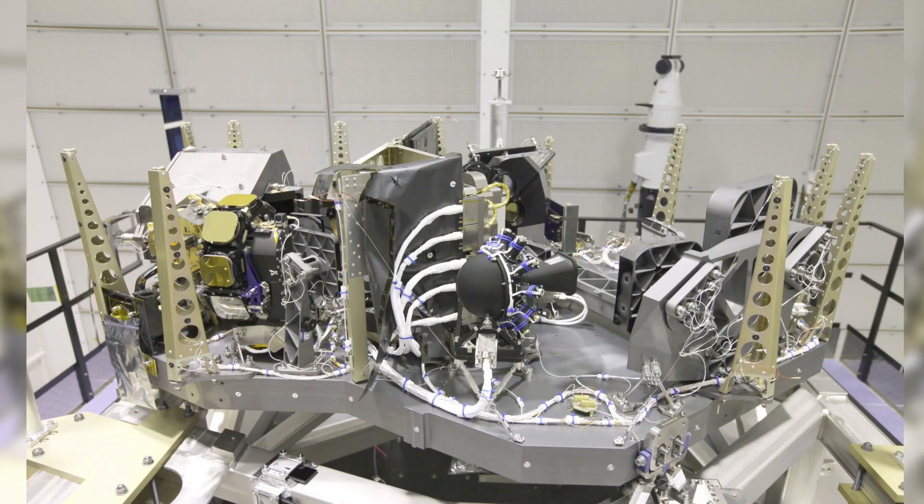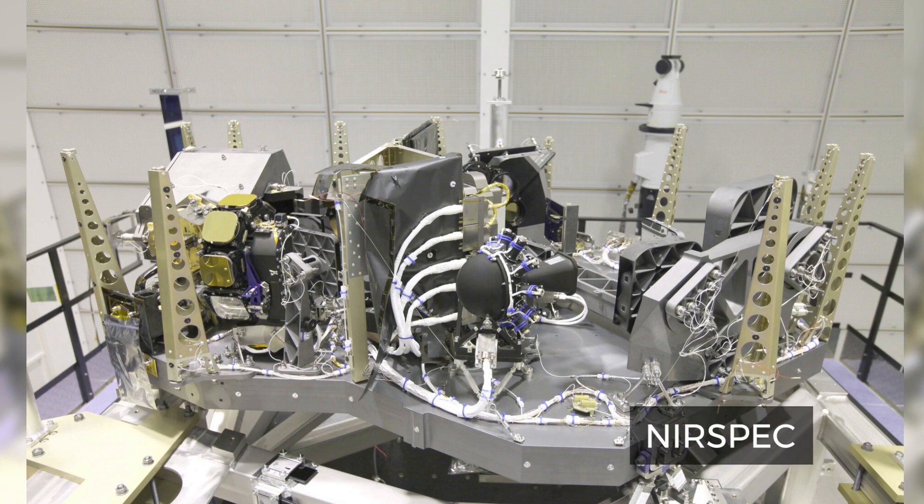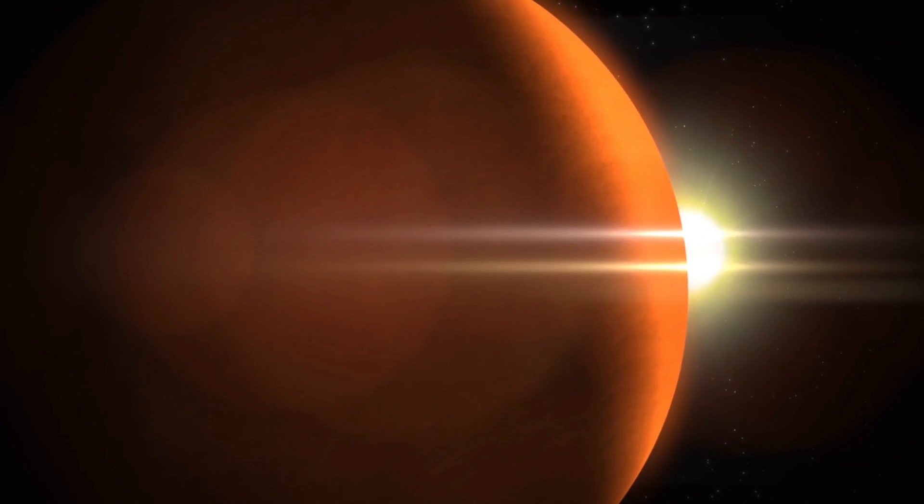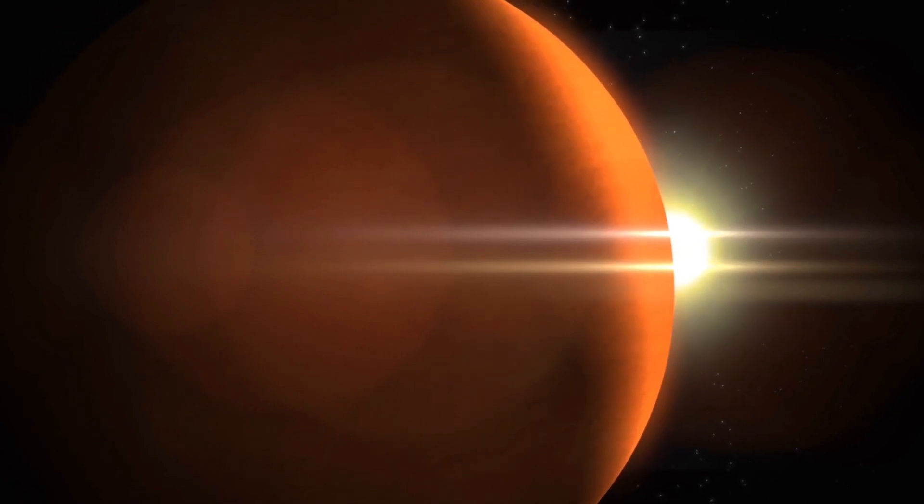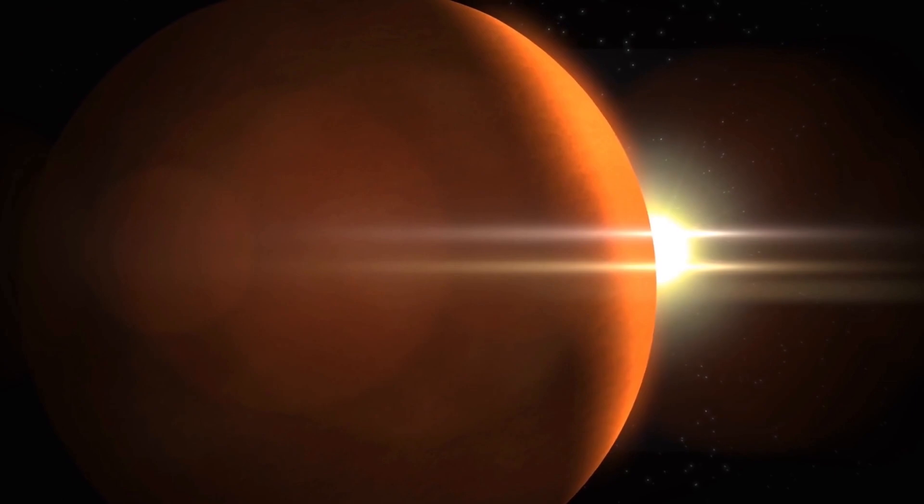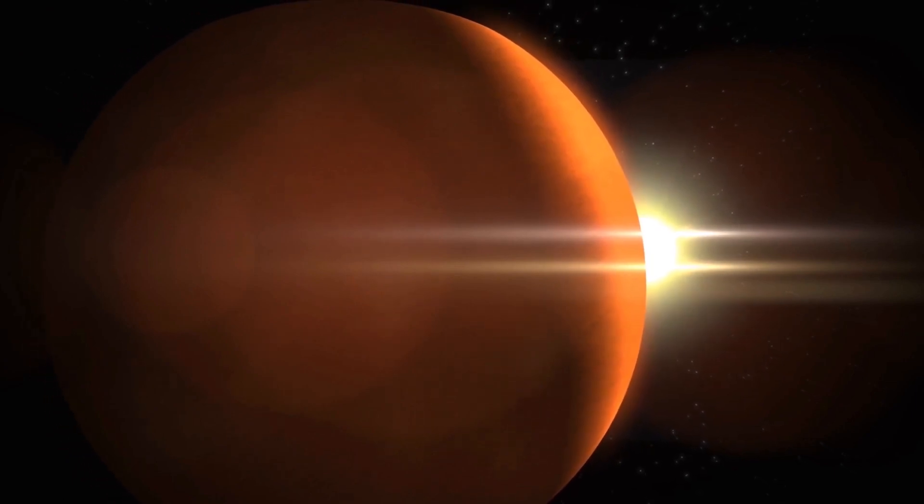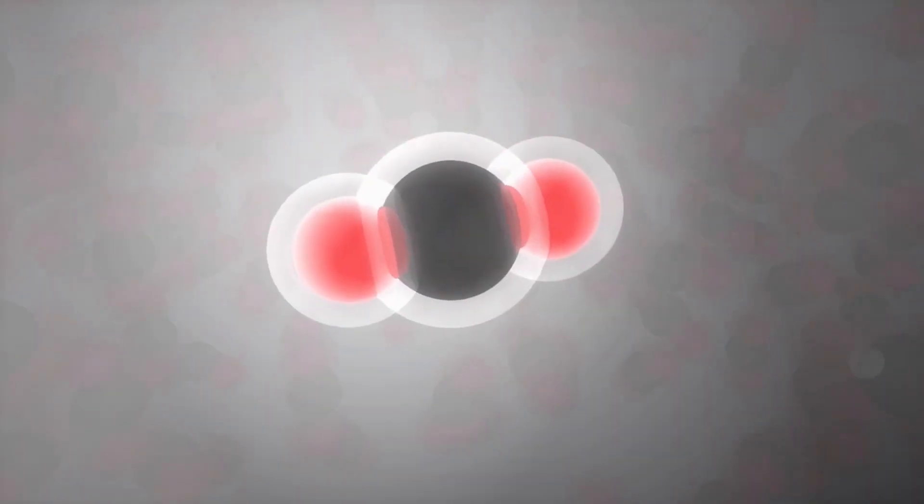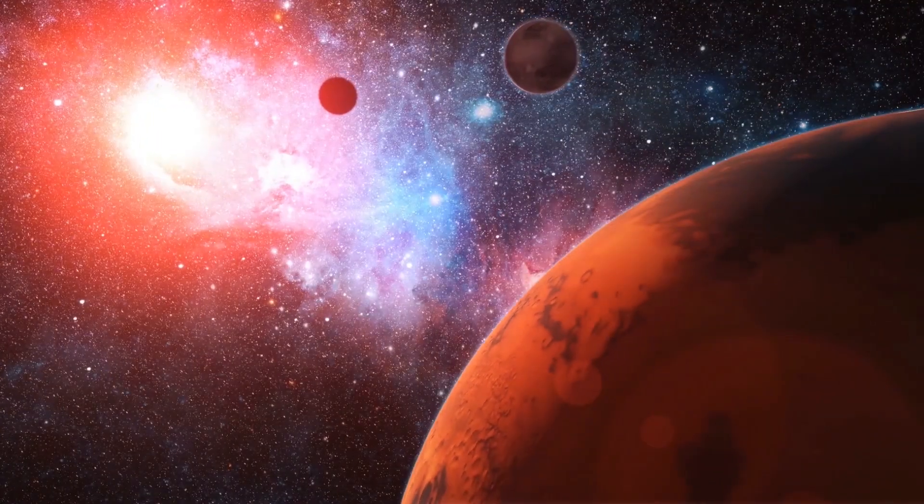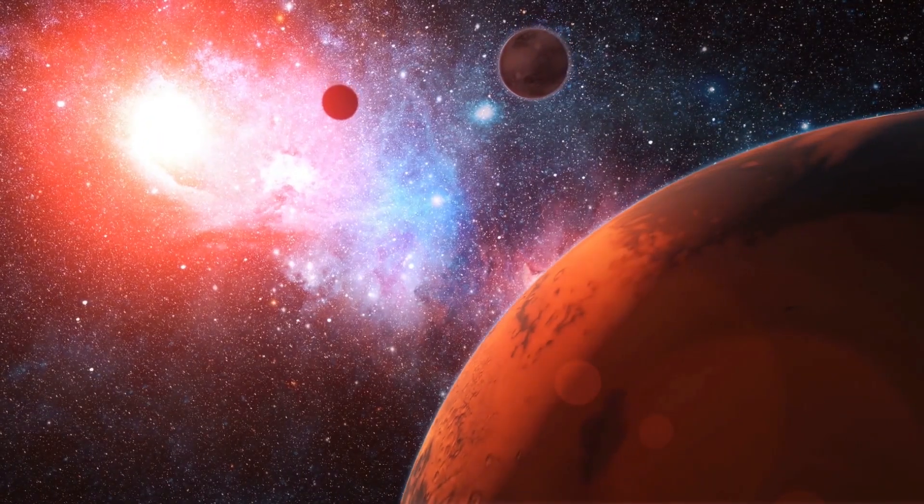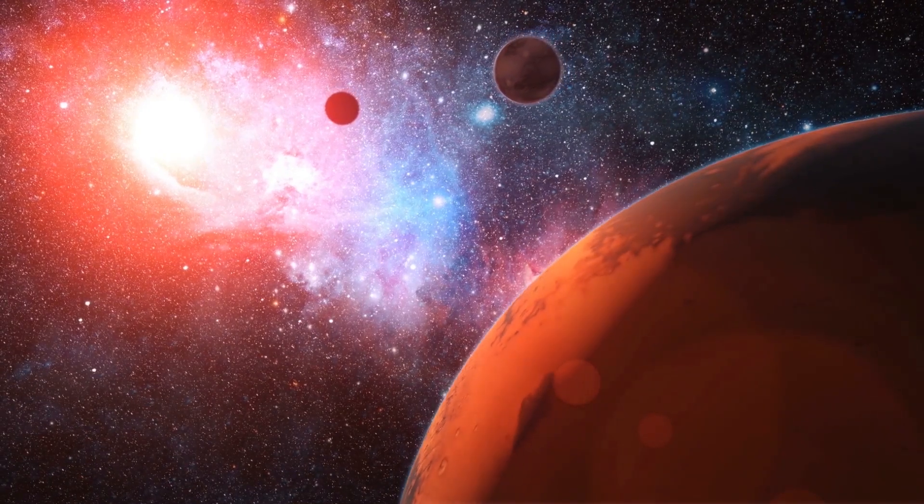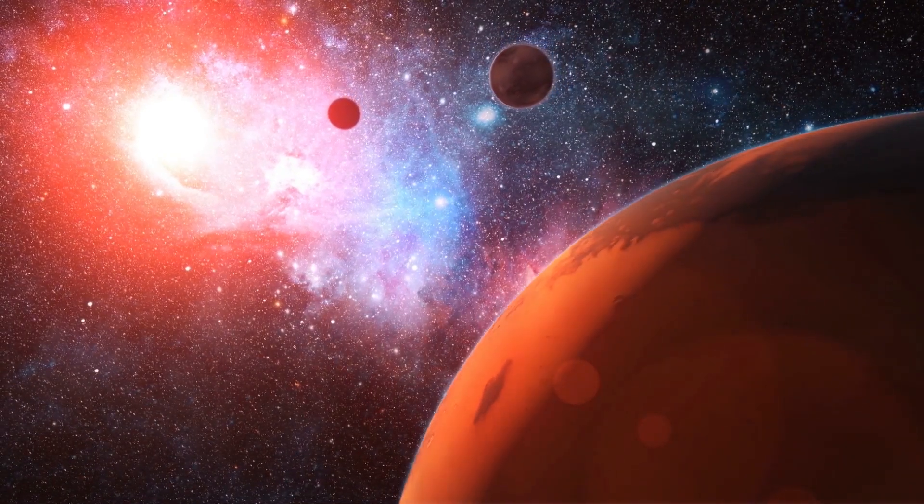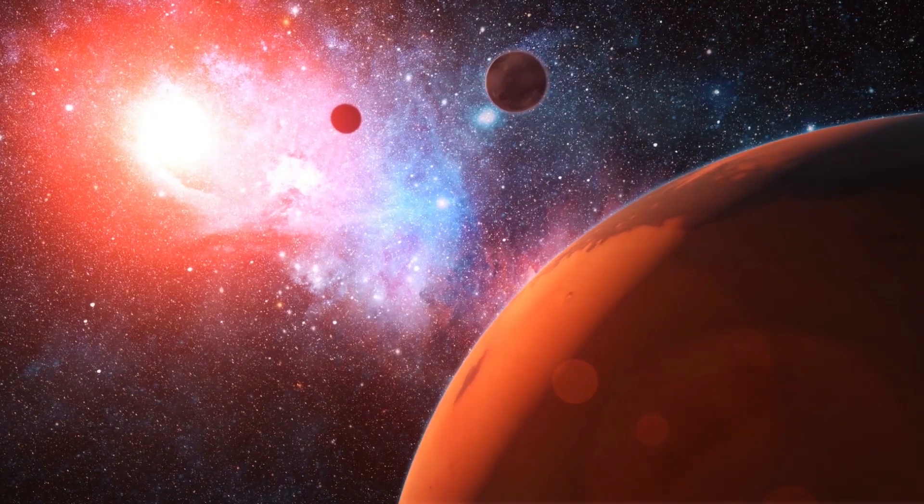JWST has an instrument called NIRSpec designed to do just that. In WASP-39b's case, astronomers found spectral signatures in the part of the electromagnetic spectrum with wavelengths between 4.1 to 4.6 microns, which is deep in the infrared. These blips indicate a clear carbon dioxide signature. Astronomers have observed other gases, like methane and water vapor, in exoplanets' atmospheres. But carbon dioxide has proven trickier to find. Until now.